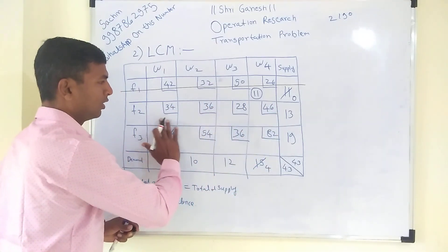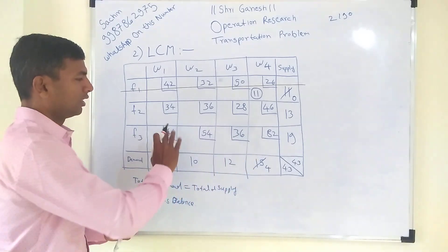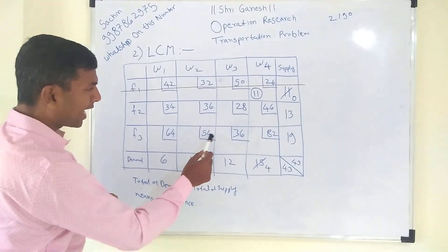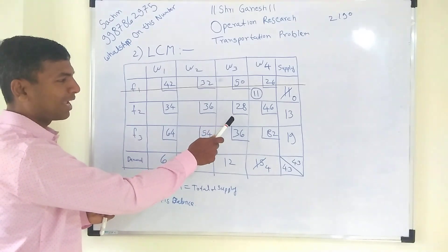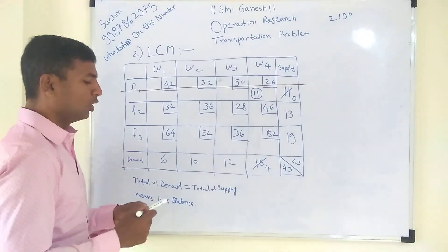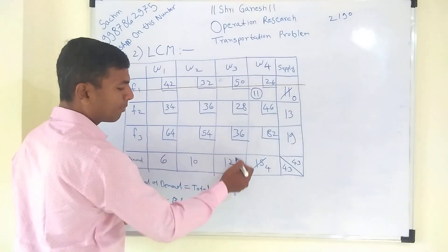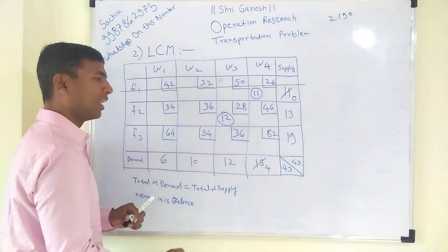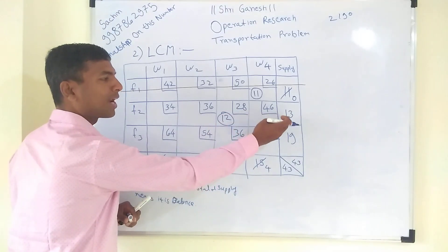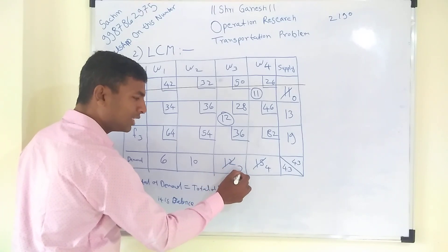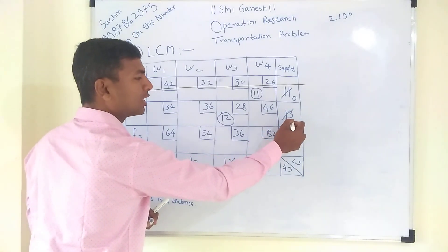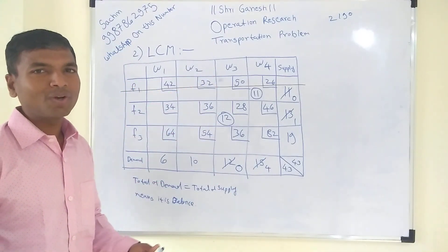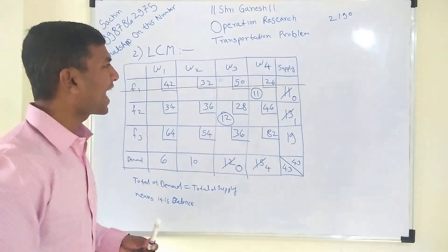Now we look at the remaining 8 cells (excluding Factory 1). Out of these, 28 is the smallest value. Check demand and supply for the cell with cost 28: demand is 12, supply is 13. The smallest is 12, so we allocate 12. Subtracting: 12 − 12 = 0 and 13 − 12 = 1. Warehouse 3 has fulfilled its demand, so we cancel Warehouse 3.